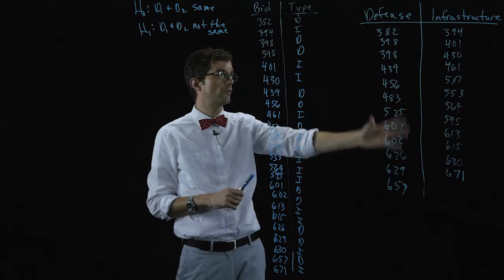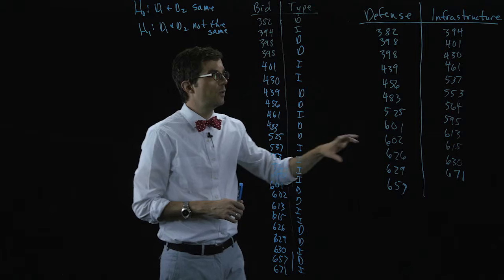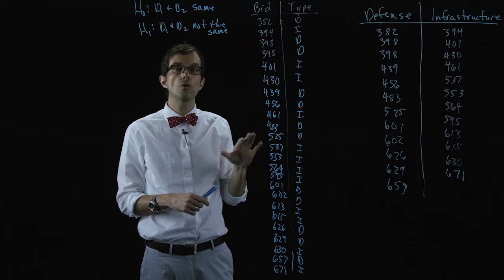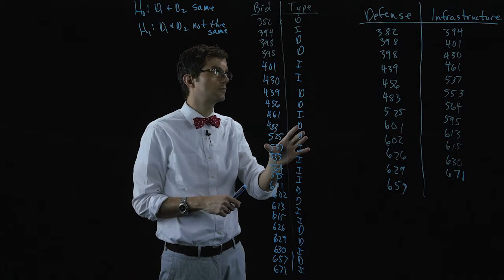So we have these twelve observations over here for each type and we want to rank those. We want to mix those all together and order them from smallest to largest. So we've already done that here.